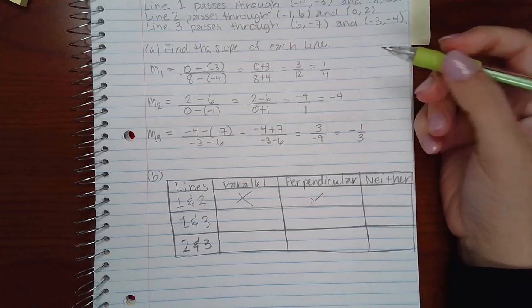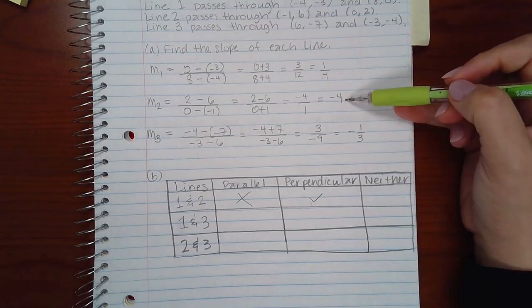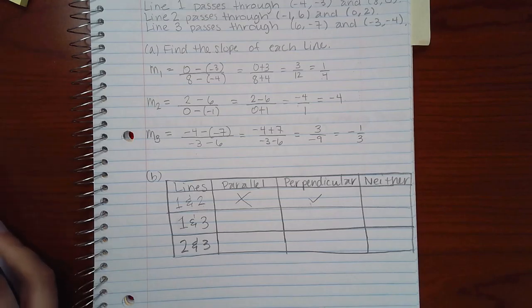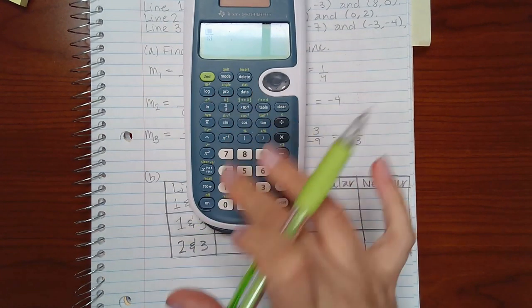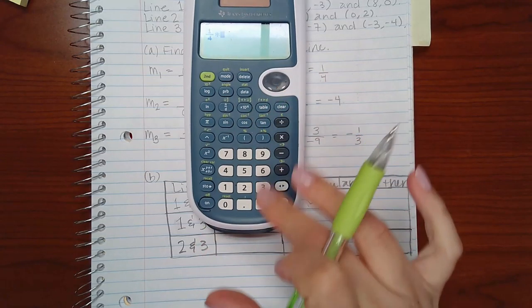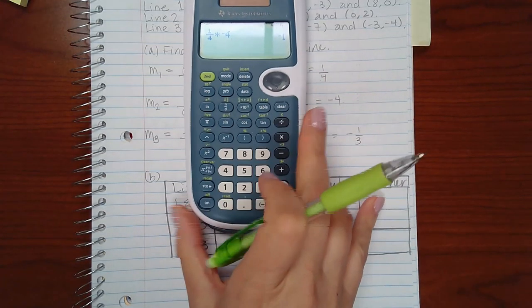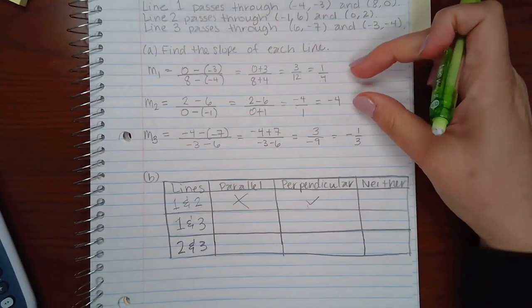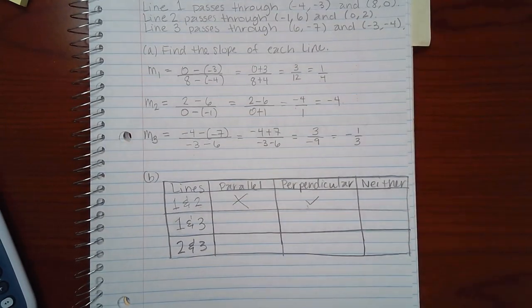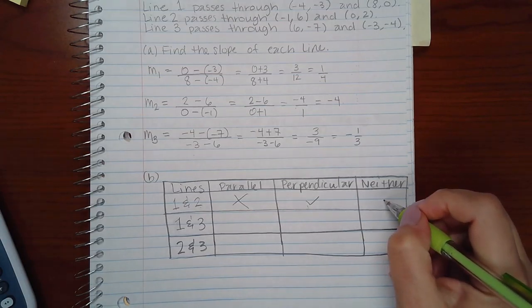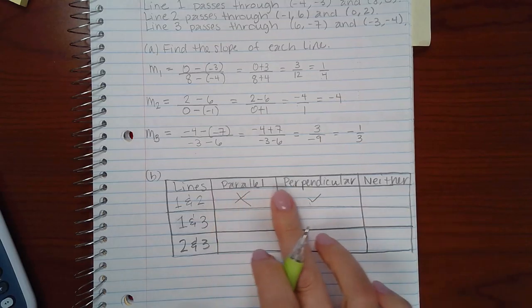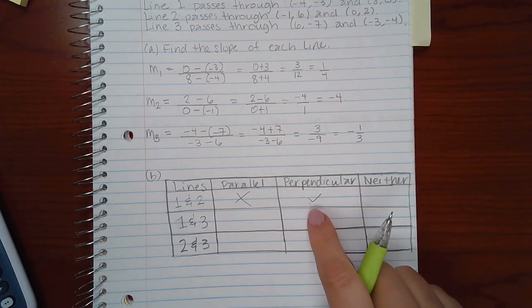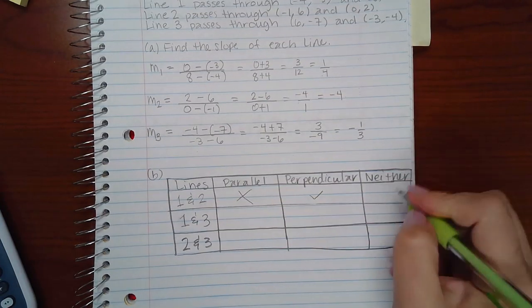A second way you can think about it is if you multiply these two numbers together, do you get negative one? If you multiply two slopes together and you get negative one, then they are perpendicular. So if I type in my calculator, one over four times negative four, I do get negative one. Therefore, these two are perpendicular. If you've selected one of these two, you cannot select neither. You're only going to end up having to select one out of all three options.